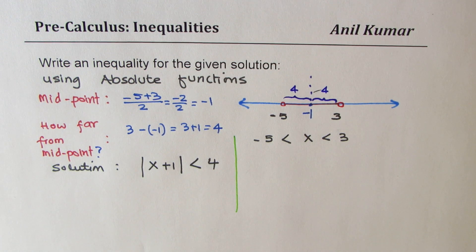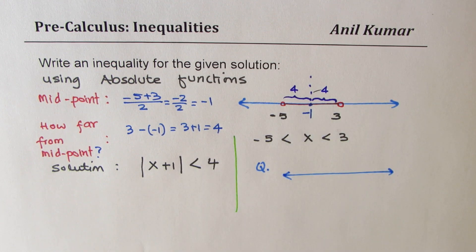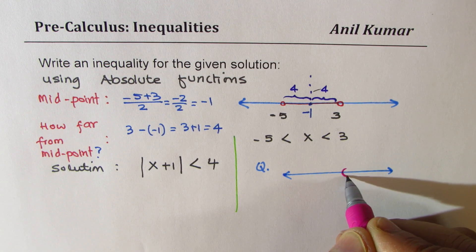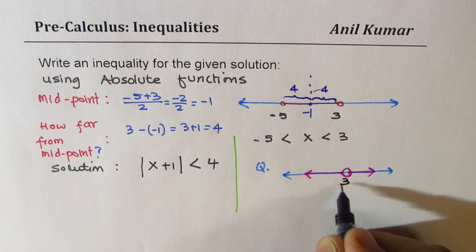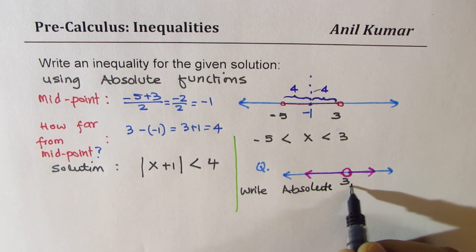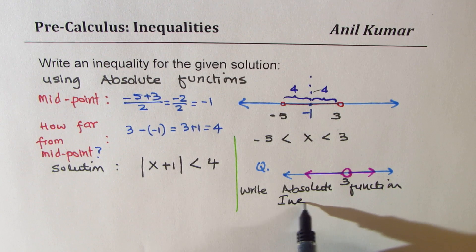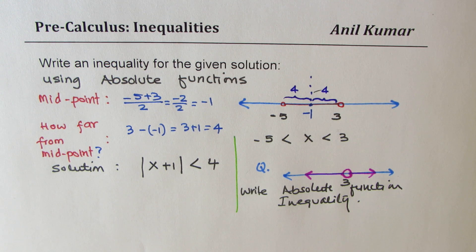Here is another test question: the solution is everything except a single point at x = 3. Write the absolute function inequality for this. Feel free to write your comments providing the solution. I hope in this video you learned all the steps required to solve inequalities. If you like and subscribe to my videos, that would be great. Thanks for watching and all the best.